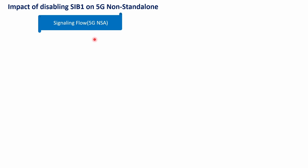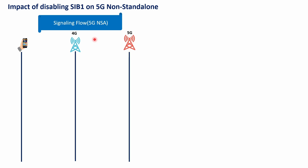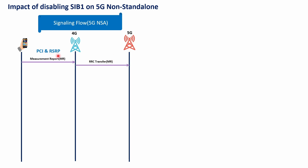Initially, the first thing the UE will do is send a measurement report. This happens after it receives the RRC reconfiguration message from the 4G, indicating the target frequency to be measured, the event type, and so on. This measurement report is sent from the UE to the 4G, then transferred from 4G to 5G through an RRC transfer message. This message covers the PCI, RSRP, and RSRQ information.